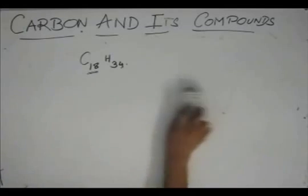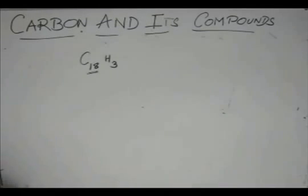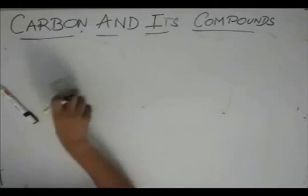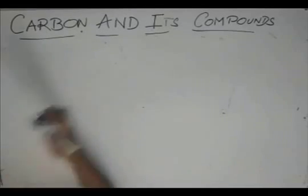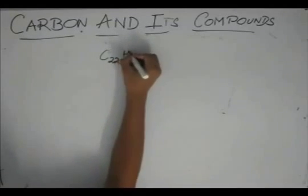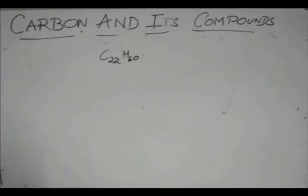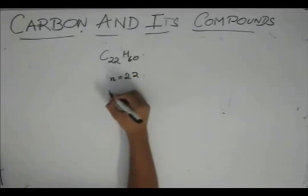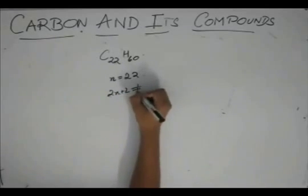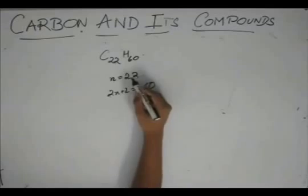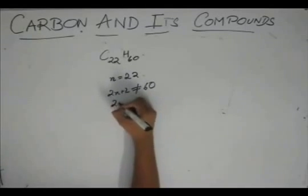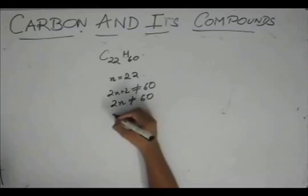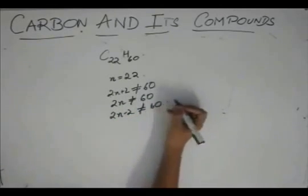You can be given compounds like C22H60. If you check, considering n as 22, then 2n plus 2 is not 60 because it's 46. 2n is not 60 because it's 44 and 2n minus 2 is again not 60 because it's 42.